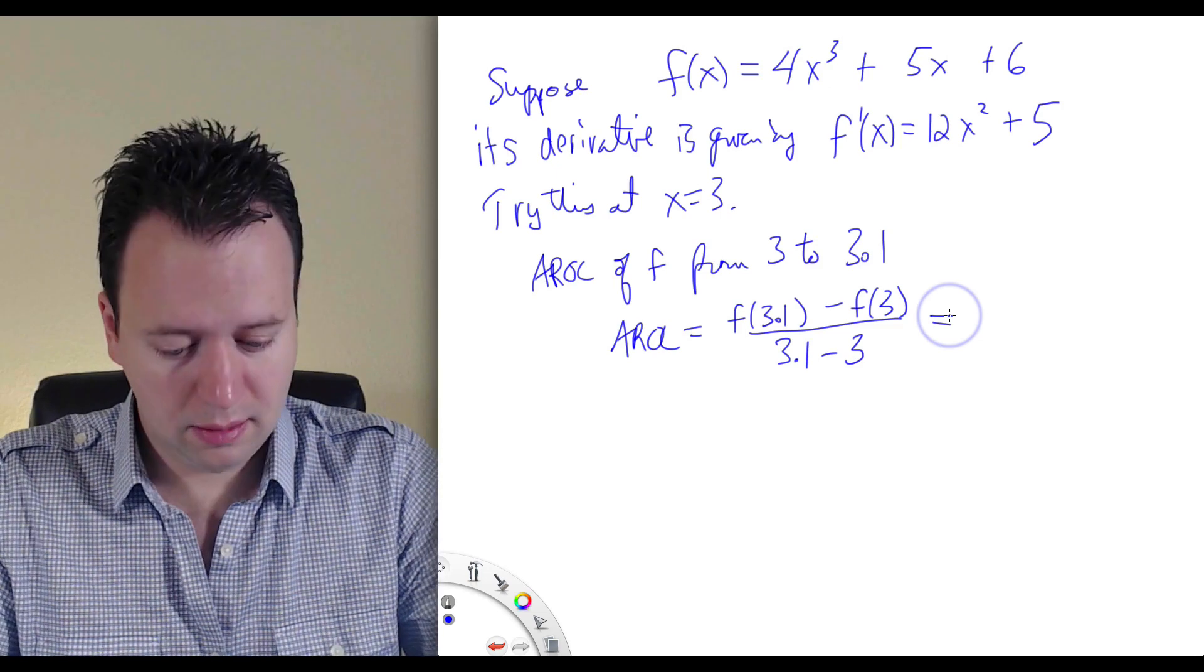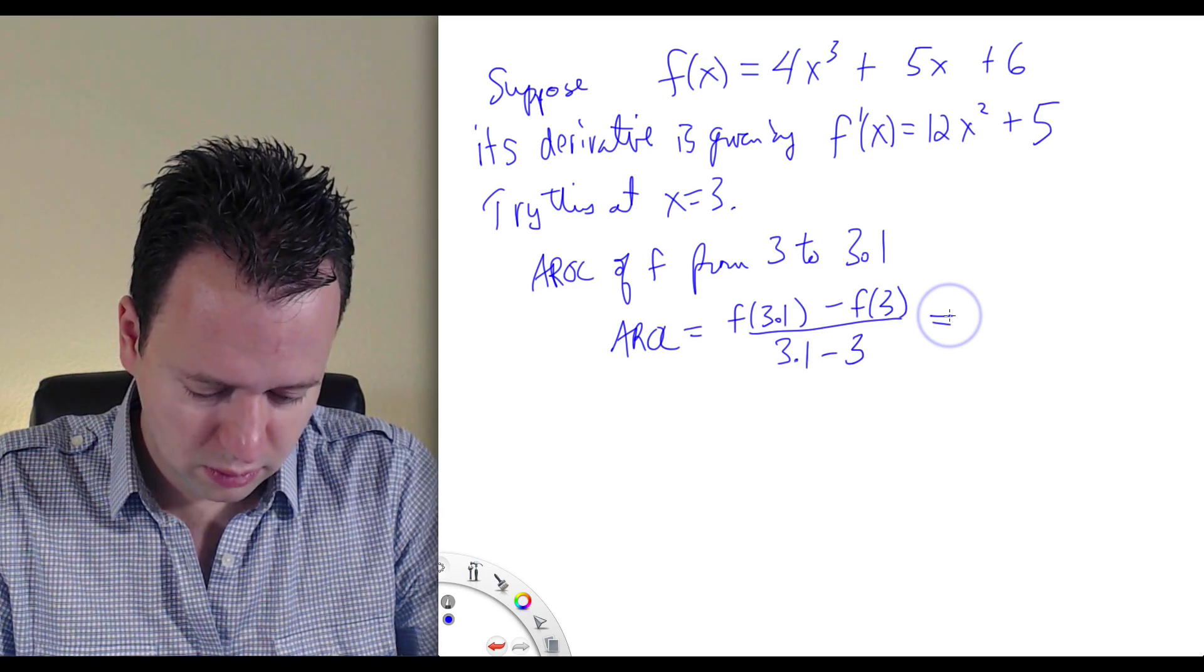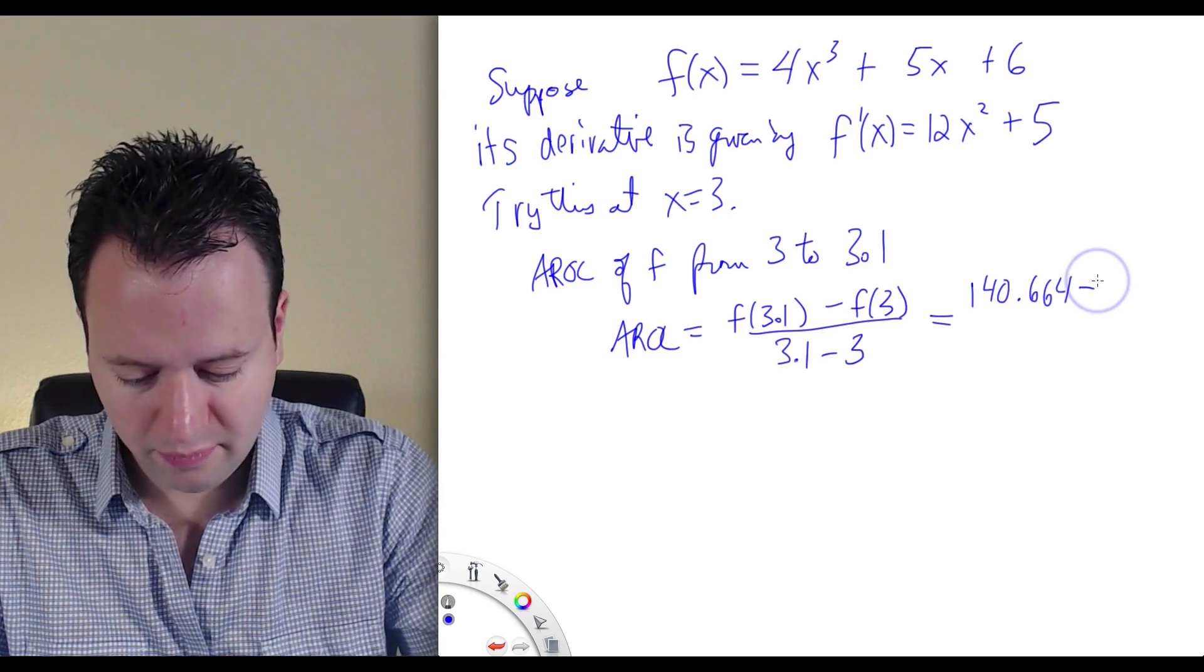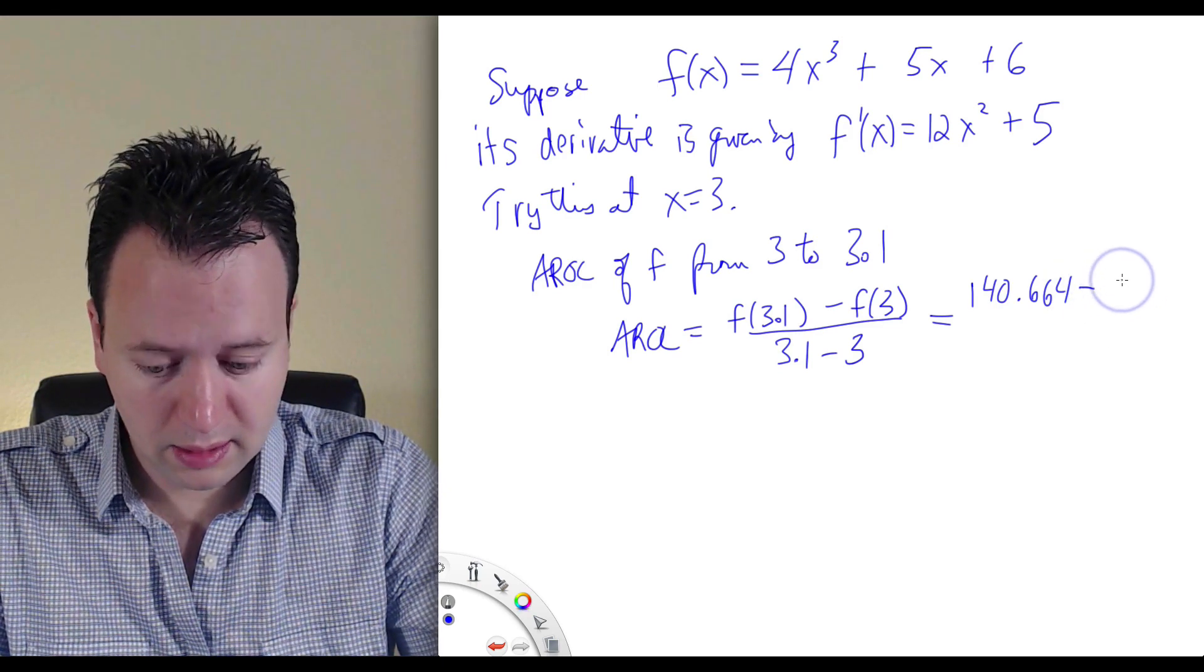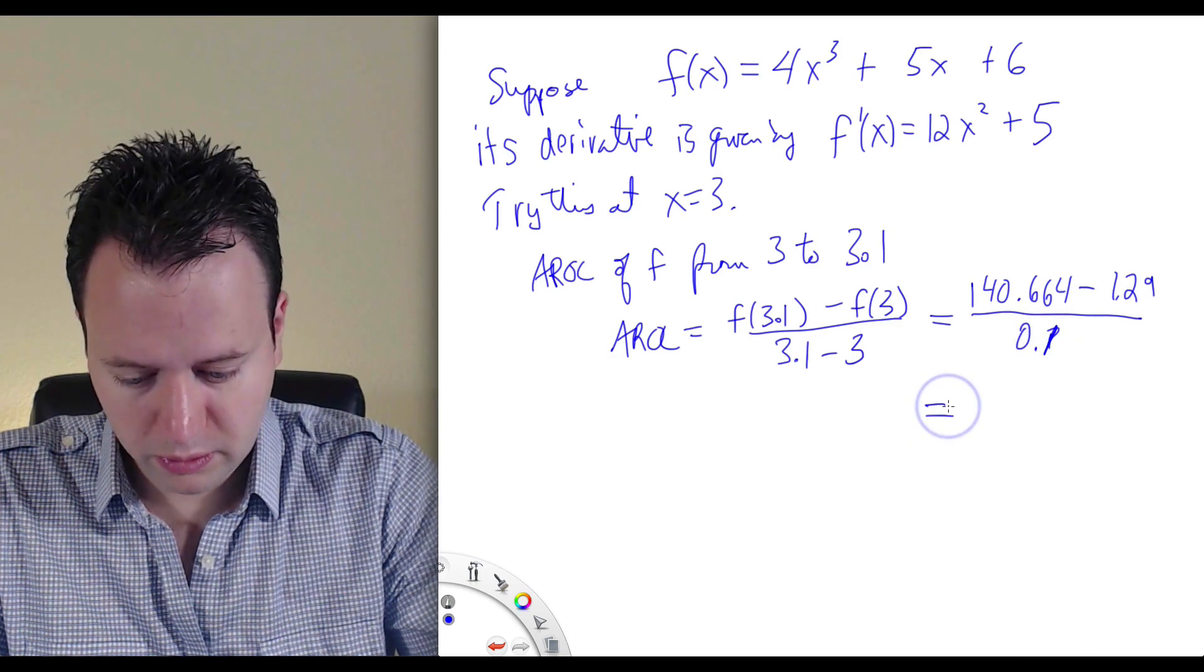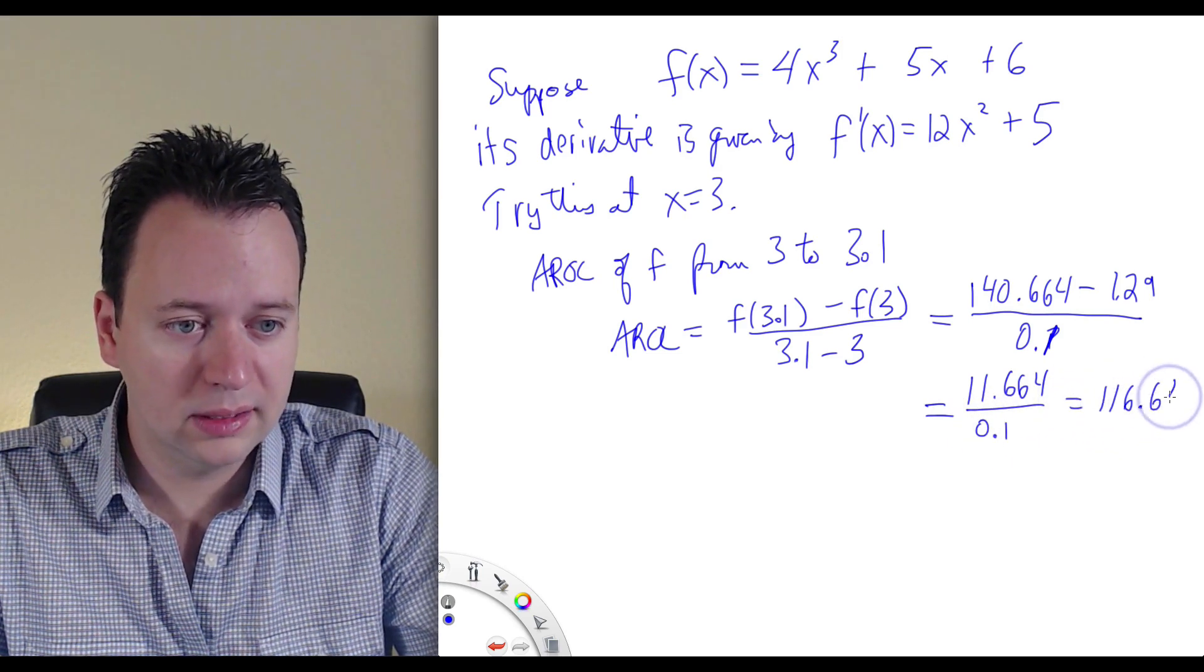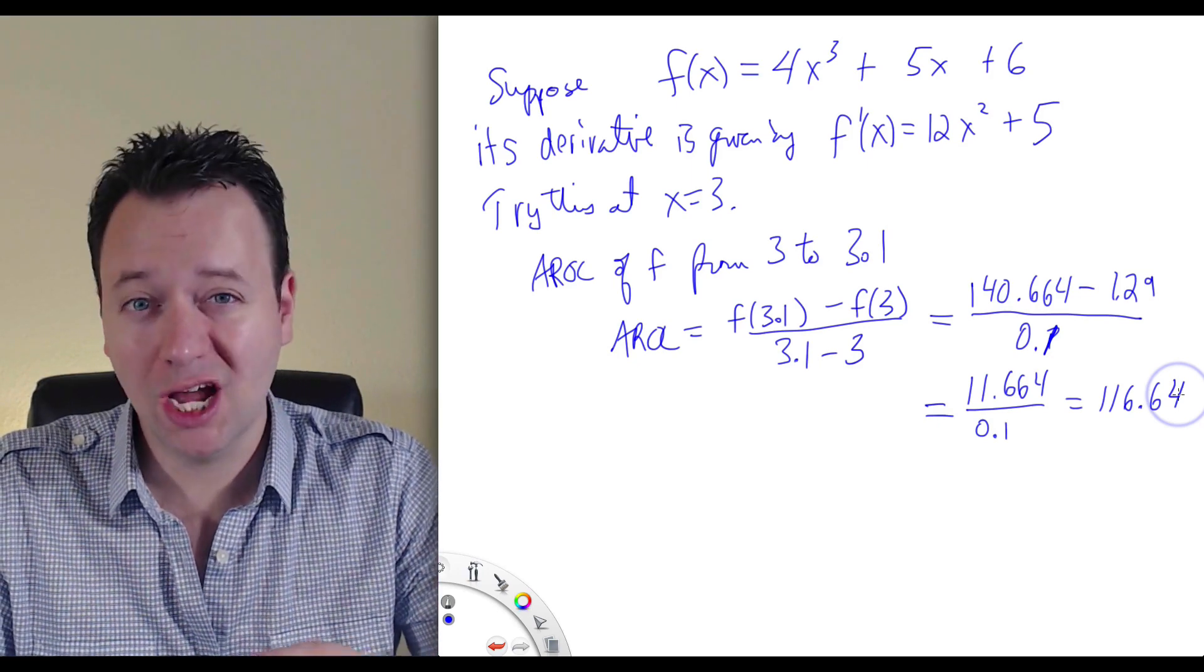So f(3.1), 3.1 cubed times 4 plus 5 times 3.1 plus 6, that is 140.664. Then minus f(3), 3 cubed times 4 plus 5 times 3 plus 6 is 129. Then all over 0.1. So that's equal to 11.664 divided by 0.1, which is equal to 116.64. So that's already a fair approximation for the instantaneous rate of change at x equals 3, assuming that the rate of change doesn't change a whole lot between 3 and 3.1.